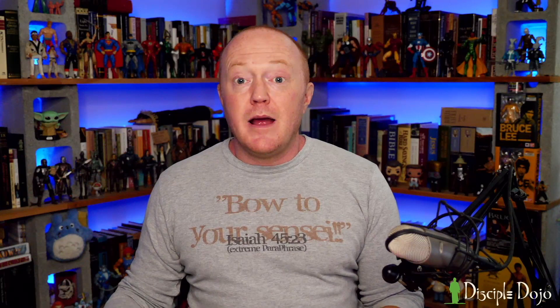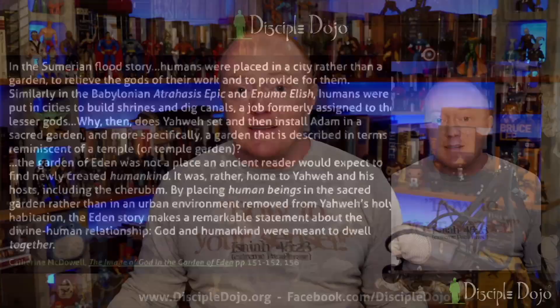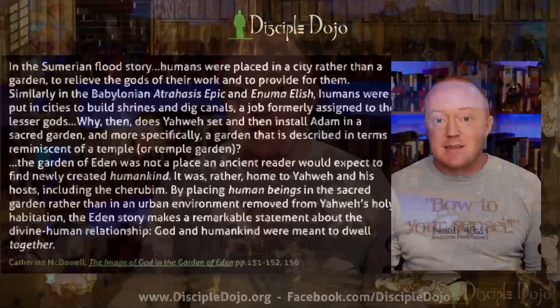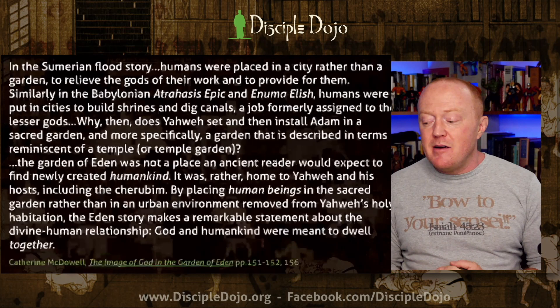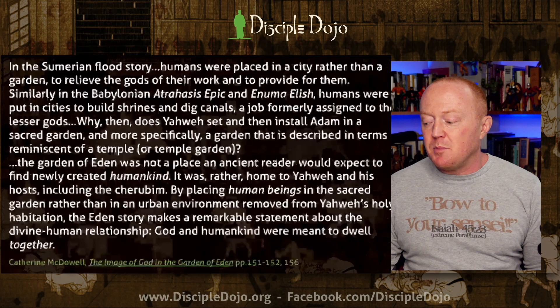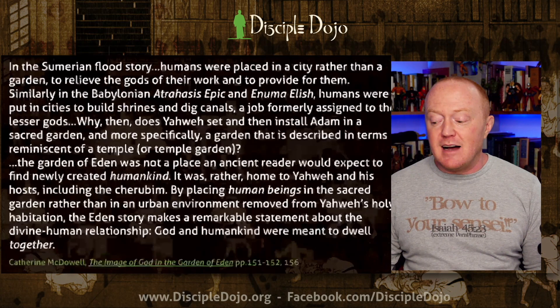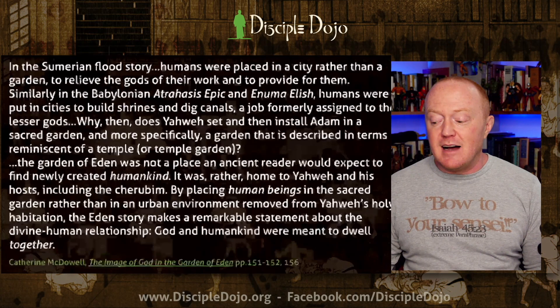McDowell says: 'In the Sumerian flood story, humans were placed in a city rather than a garden to relieve the gods of their work and to provide for them. Similarly, in the Babylonian Atrahasis epic and the Enuma Elish, humans were put in cities to build shrines and dig canals, a job formerly assigned to the lesser gods.' Why then does Yahweh install adam in a sacred garden — and more specifically a garden described in terms reminiscent of a temple or a temple garden?